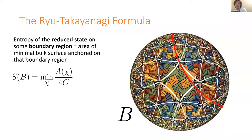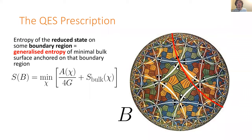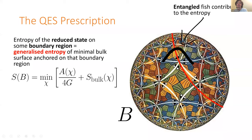The Ryu-Takayanagi formula says that entropy is given approximately by the area of the surface through the bulk anchored on that boundary region that has the smallest area. This beautiful formula has led to all sorts of progress, but it's not quite right — in particular it needs to include quantum corrections. Instead of just minimizing area, you should really be minimizing area over 4G Newton, plus an additional term which is the bulk entanglement between bulk fields on either side of this surface.